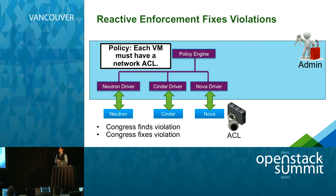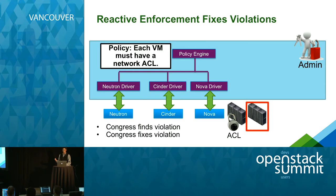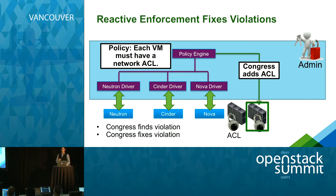The third way Congress implements policies is reactive enforcement, where the policy engine is actually making changes to the data center itself. Revisiting the policy that each VM must have a network ACL — you can see servers with ACLs attached. If someone adds a new VM without an ACL, that causes a violation. Congress can detect this soon after the VM is added, and with a reactive enforcement policy, Congress will automatically add the ACL rules to that VM to fix the violation.